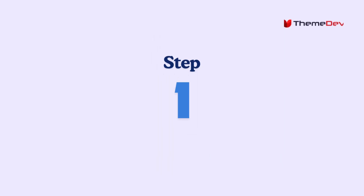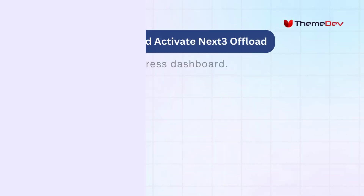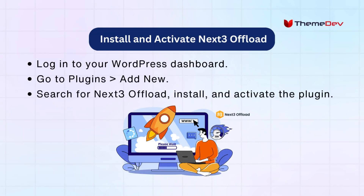Let's get started. Log into your WordPress dashboard. Go to Plugins and click Add New. Search for Next3 Offload, install, and activate the plugin.